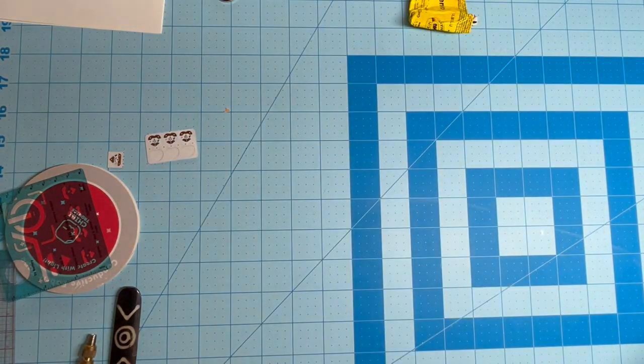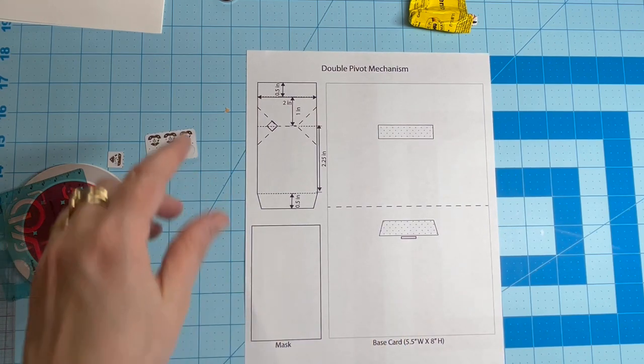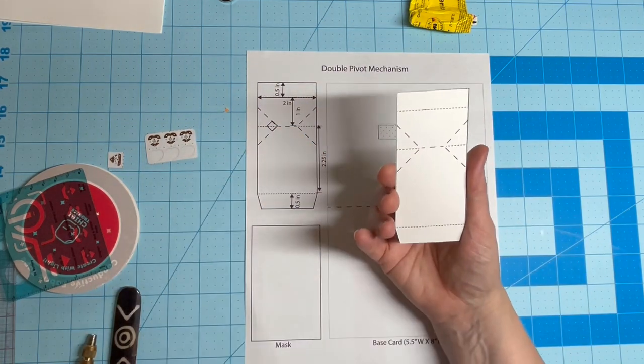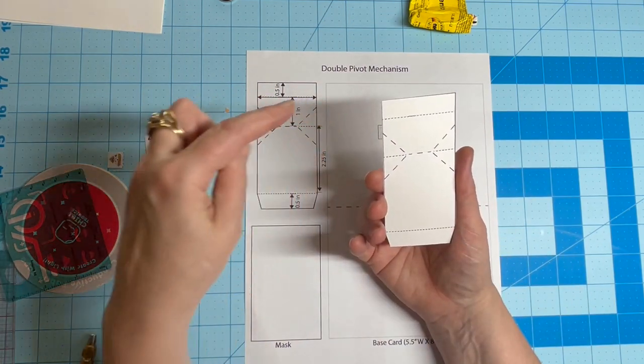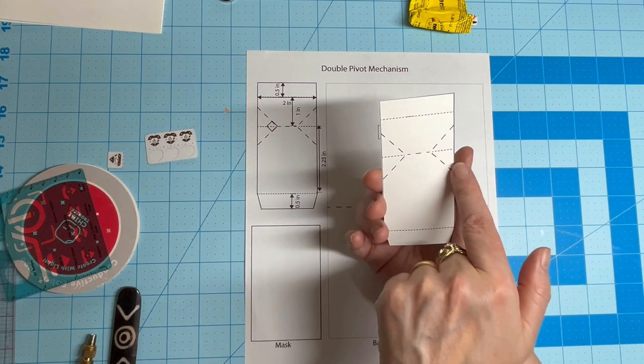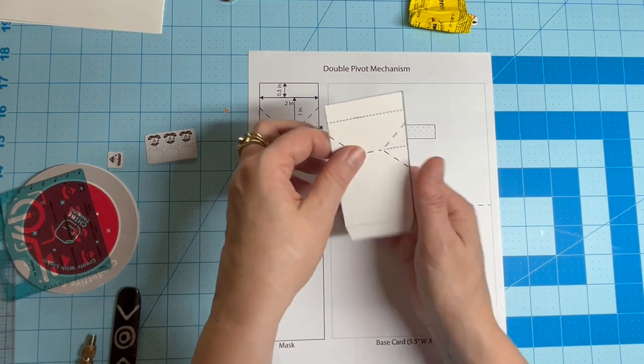Alright, let's get started. The Double Pivot Mechanism is a parallelogram. It has a half-inch glue tab on top, a score line an inch down, with two 90-degree angles scored on each side, a third score line two and a quarter inches down, and a second glue tab at the bottom.